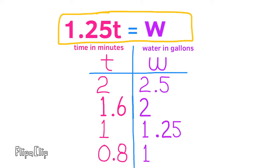The second equation for this proportional relationship is w = 1.25t. This means the number of gallons of water depends on the time in minutes that the water is running. When you multiply the time in minutes by 1.25, it tells you how many gallons of water would collect in the tub. For example, 1 minute × 1.25 = 1.25 gallons of water collecting in the tub.